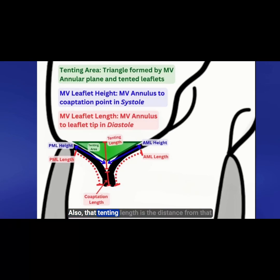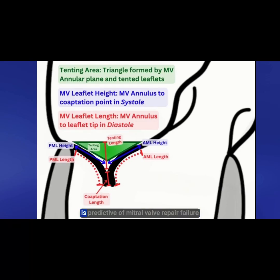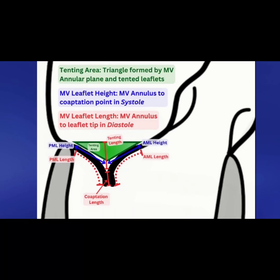Tenting length is the distance from that mitral valve annular plane to the coaptation point. Tenting length greater than one centimeter is predictive of mitral valve repair failure in ischemic secondary MR as well.